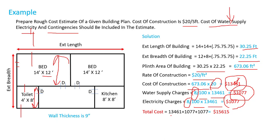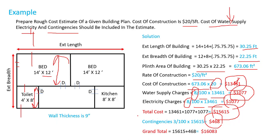The total cost equals the cost of construction plus water supply charges plus electricity charges, coming to $15,615. Now we need to add contingencies, which could apply to construction, water supply, or electricity charges. We take 3% of the total cost: 3 divided by 100 multiplied by $15,615, giving contingencies of $468. The grand total equals total cost plus contingencies, giving us $16,083.